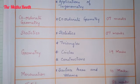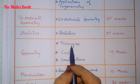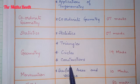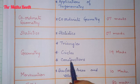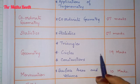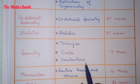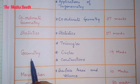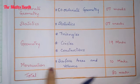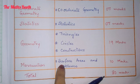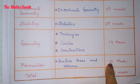The next theme is Geometry, which has three topics: Similar Triangles, Circles, and Construction. From these three topics, 19 marks questions are allotted. The next theme is Mensuration — it has only one topic, Surface Area and Volume, which carries 10 marks.